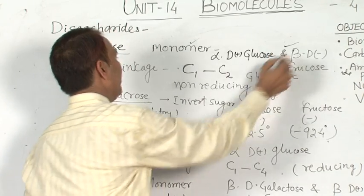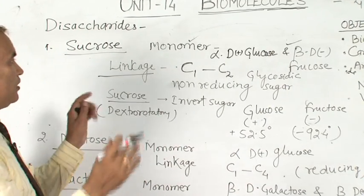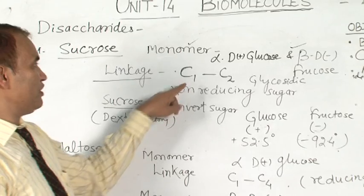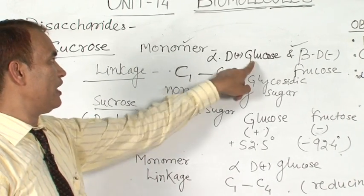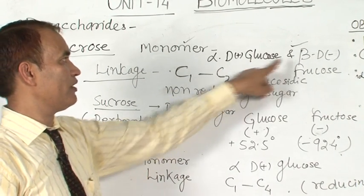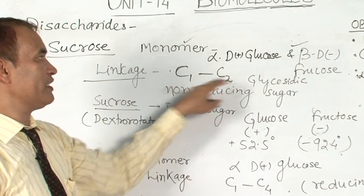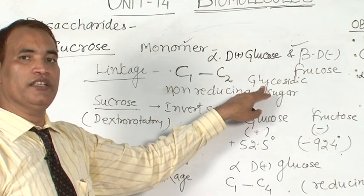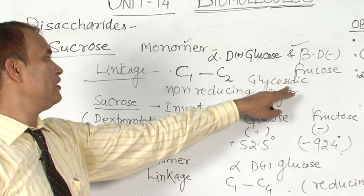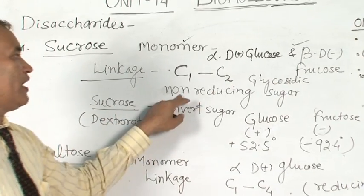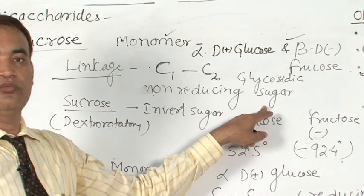The linkage in sucrose: how are the monomers linked together? There is a glycosidic linkage between C1 of glucose and C2 of fructose — this is the C1–C2 glycosidic linkage. Sucrose is a non-reducing sugar because there is no free carbonyl group.